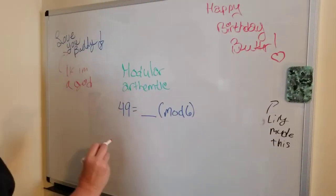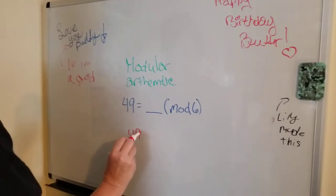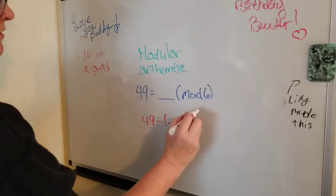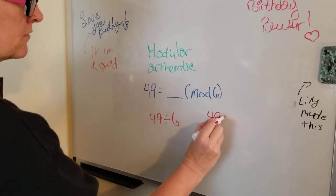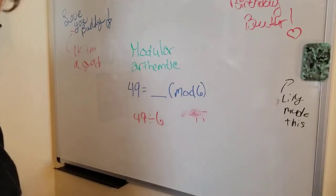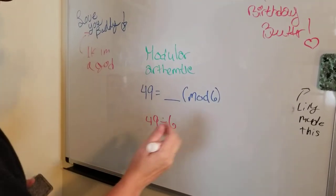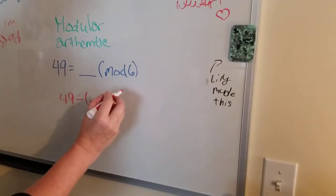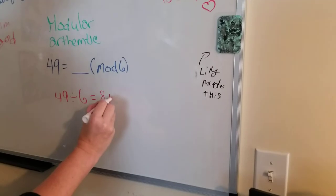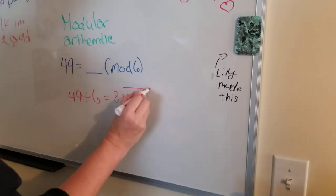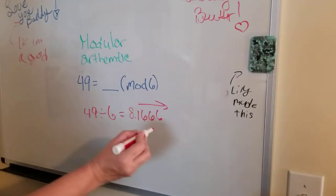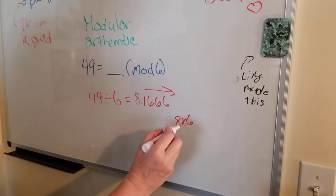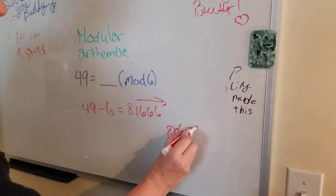What we can do is easily divide 49 by 6. This equals about 8.1666 and so on. So then you do 8 times 6, which equals 48.